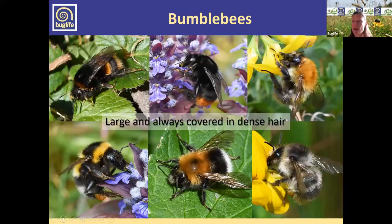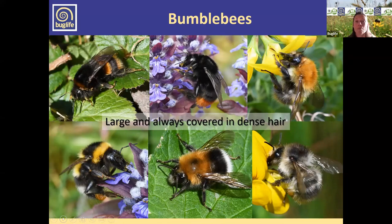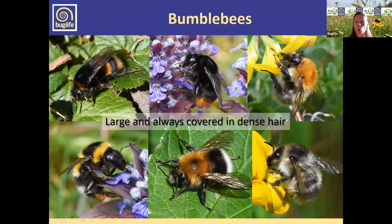Our bumblebees are a fairly easily recognizable group — they tend to be large with quite densely furry bodies. We've got around 250 species worldwide, and most are found in the cooler regions of the northern hemisphere, particularly around the Himalayas, because they're very well adapted to cooler conditions with their large hairy bodies. They're also able to warm their own bodies.